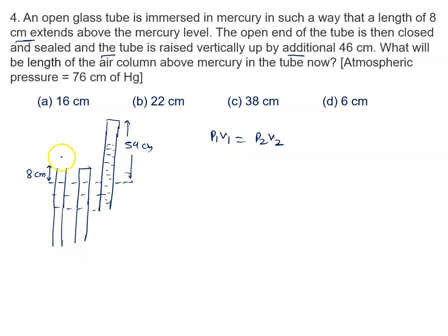This is the first situation. At this situation the pressure is P0, open to environment. Volume is given by area into length. We are writing centimeter. Keep this in mind. And we are taking area of cross section as A.